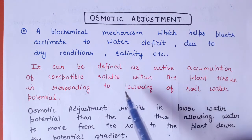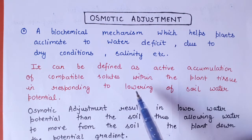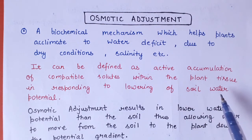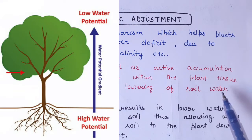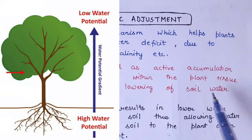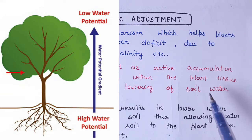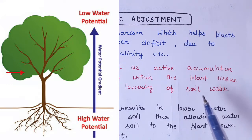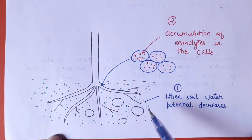Soil water potential is reduced. As you know, water always moves from high water potential to low water potential. So if the soil water potential is reduced in comparison to the plant tissue, water available in the plant tissue does not move into the soil. To maintain water uptake, there is an osmotic adjustment in the plant. We have made a diagram to help clarify osmotic adjustment.